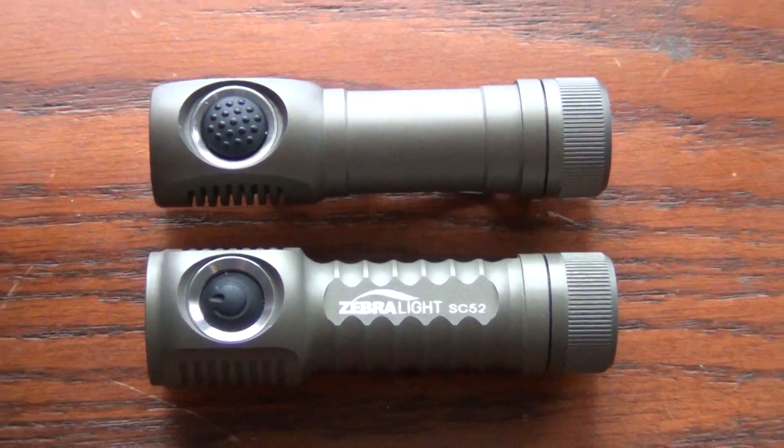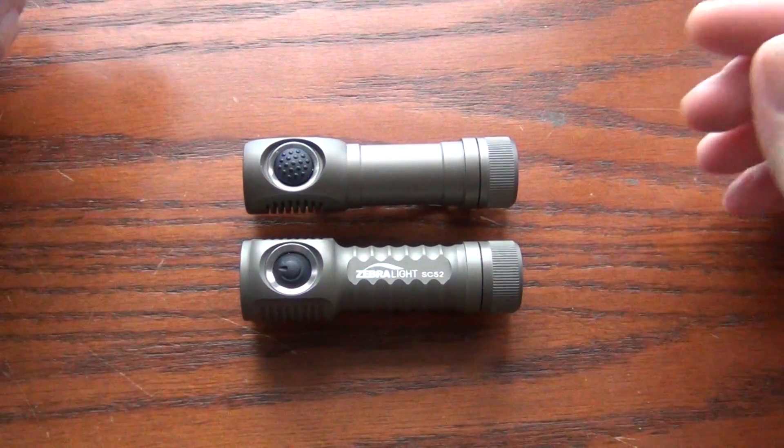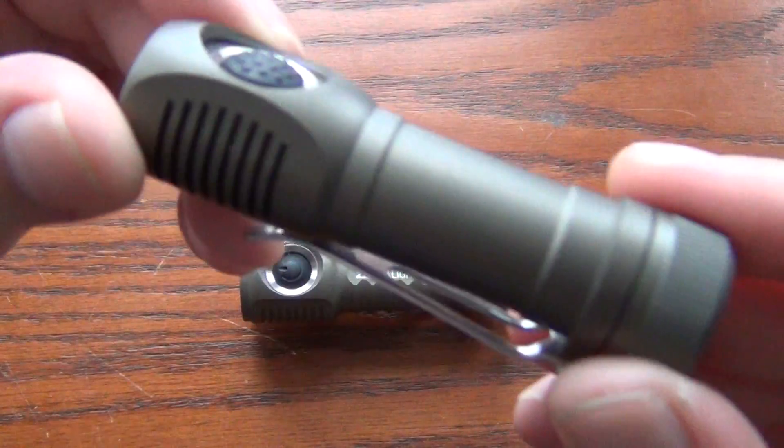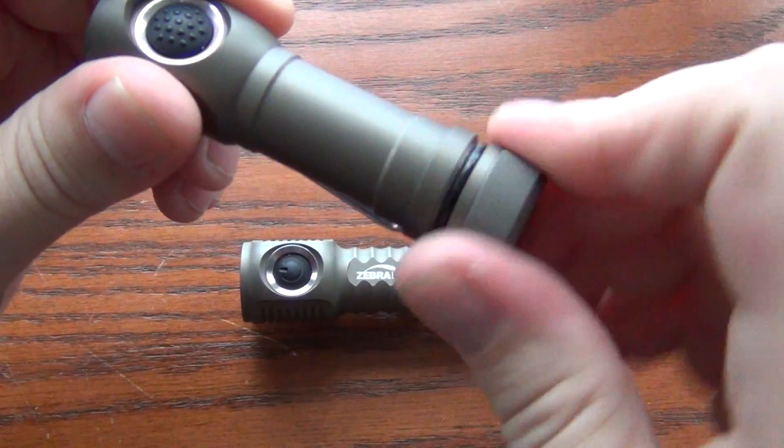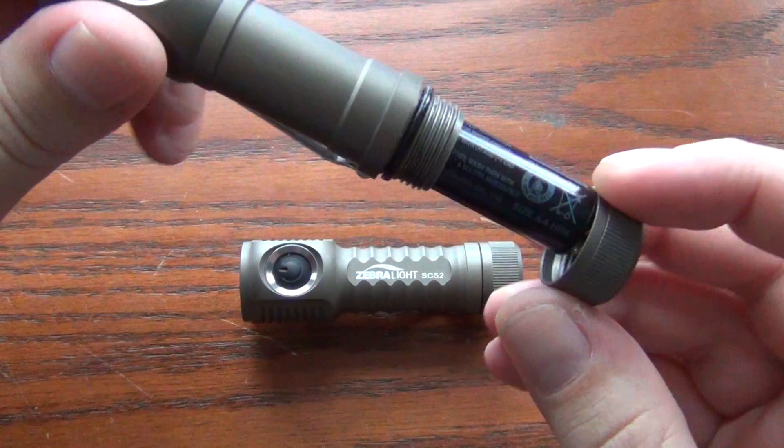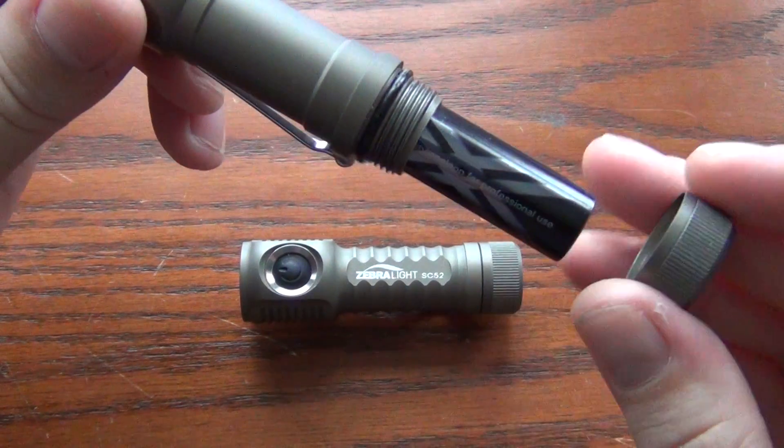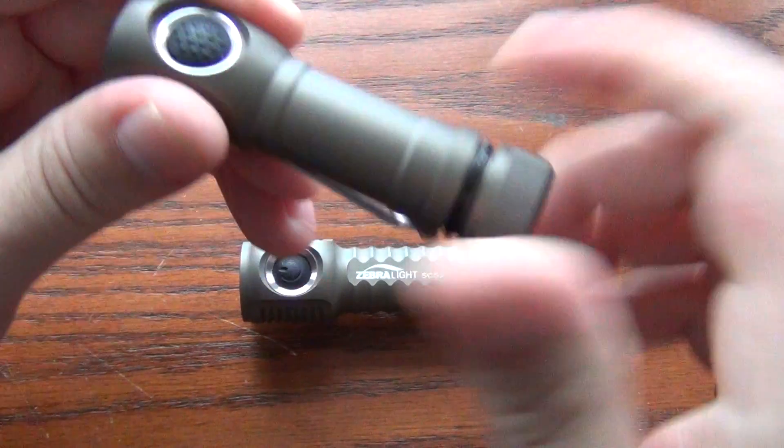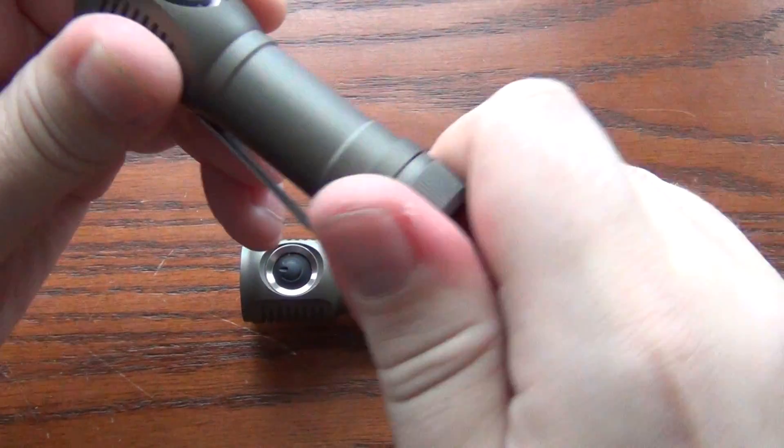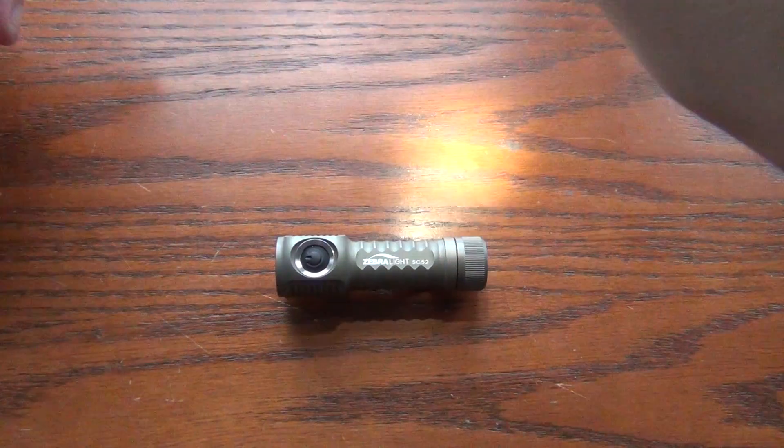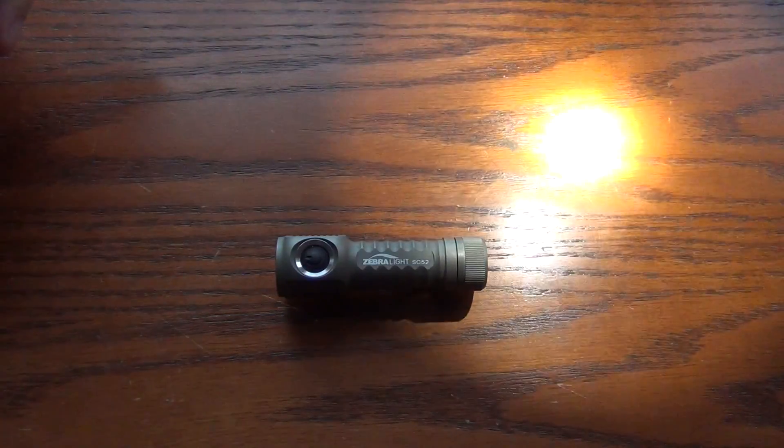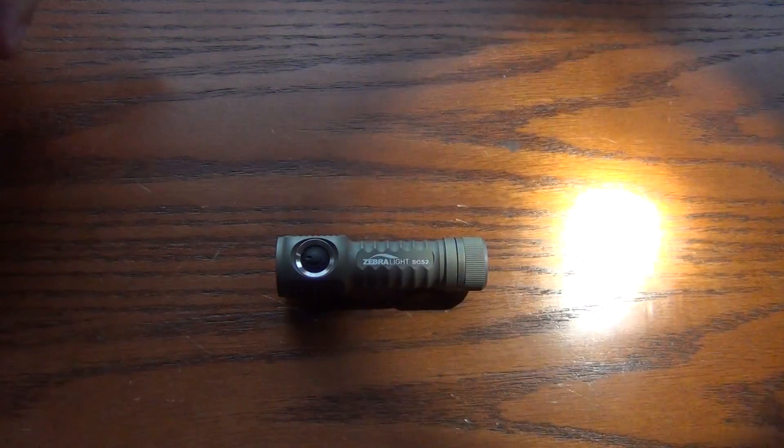These are two Zebralights here. This is the SC51 which is a very popular light. It uses a single AA. This happens to be an Eneloop AA. This is a neutral white version so it will have a warmer color.